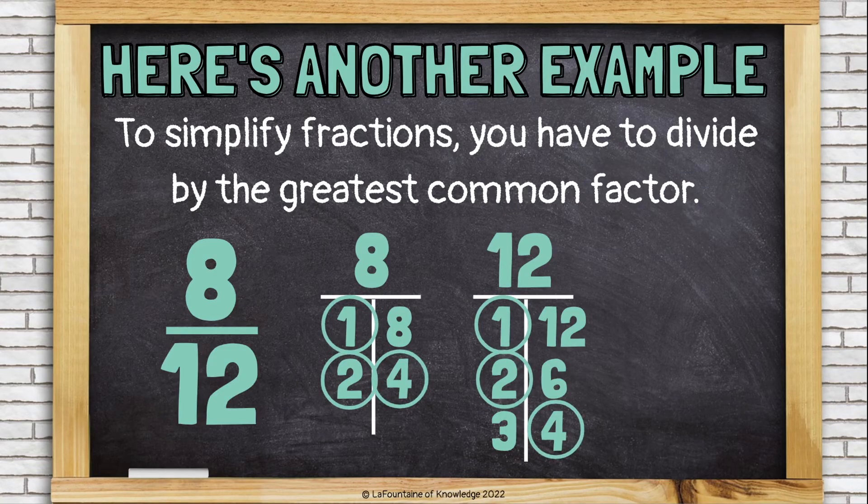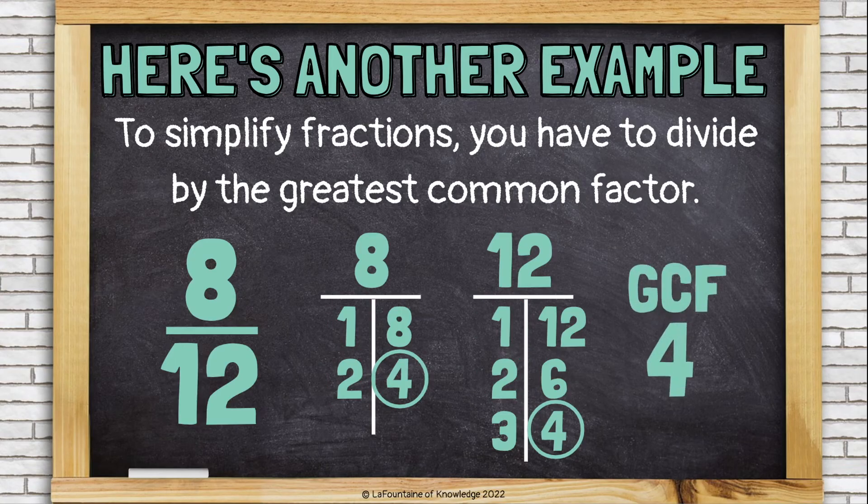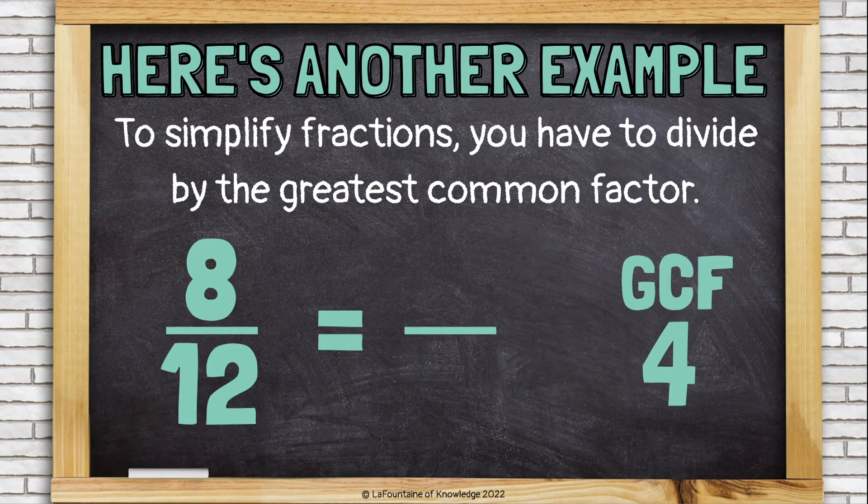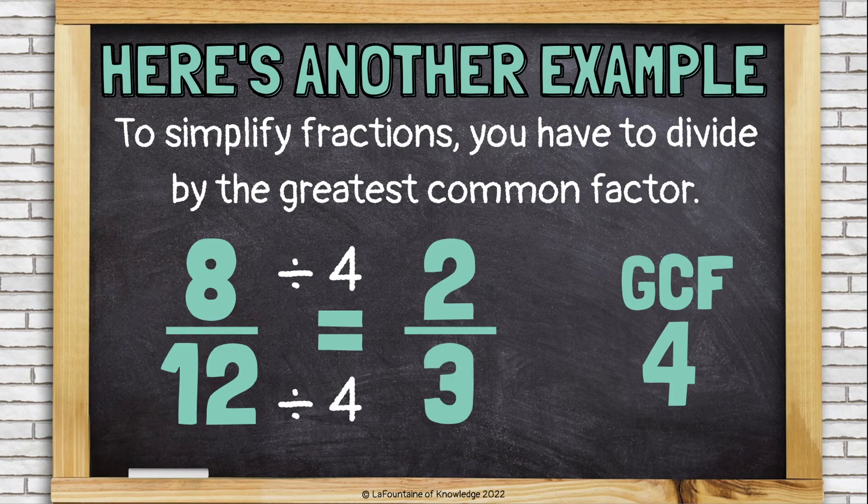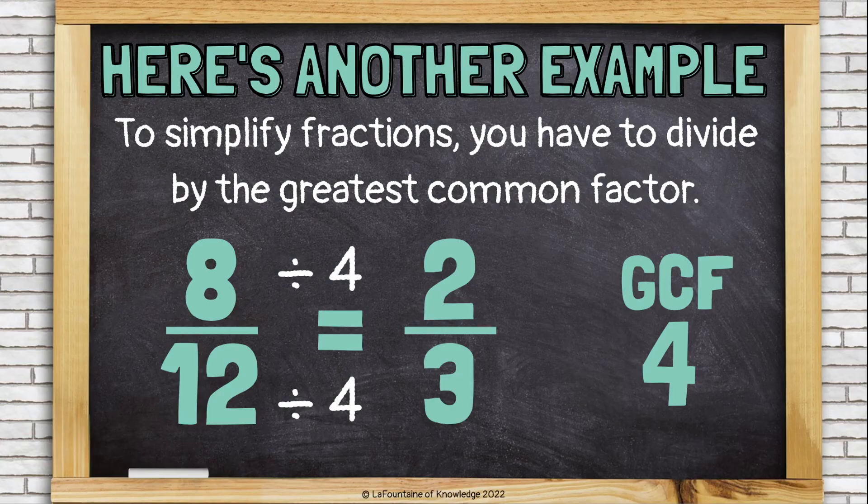Which of these is the greatest? One, two, or four? It's four. Four is the greatest common factor. So let's divide eight by four and twelve by four to get our fraction in simplest form. Eight-twelfths reduces down to two-thirds.